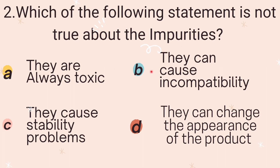The options are: Option A — they are always toxic; Option B — they can cause incompatibility; Option C — they cause stability problems; Option D — they can change the appearance of the product. The correct answer is Option A — impurities are not always toxic or harmful. They may cause incompatibility or other issues, but they are not necessarily toxic.